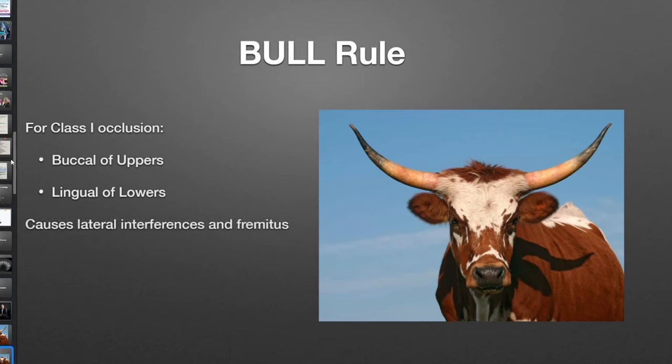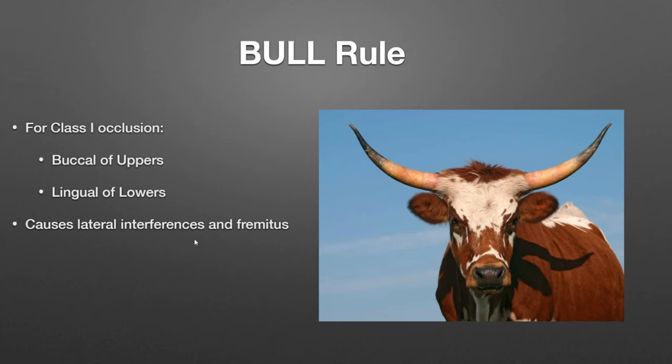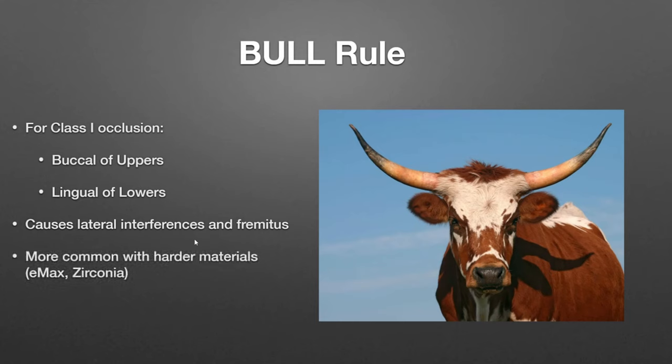If they are too high, it's going to cause lateral interferences. Does everyone know what fremitus is? It's where you put your finger on the tooth and when they bite down, the tooth physically moves — that's often a check I'll do. We're seeing fremitus more and more because we're using harder and harder crown materials. Back in the day with gold and PFMs, the crown would be high for a couple of weeks, the opposing would wear down the interferences, and they'd be back to normal. The problem is Emax and zirconia are so hard, it's never going to wear down.